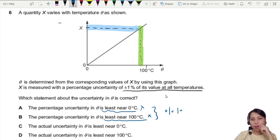So your percentage, one percent, this is a percentage uncertainty. So A and B is out.